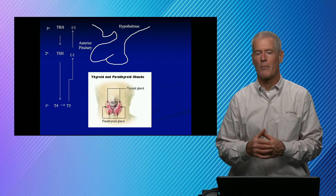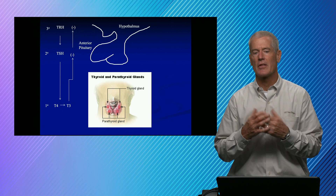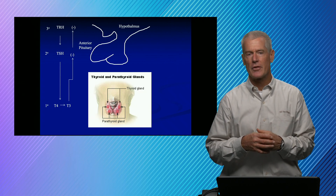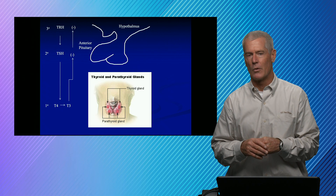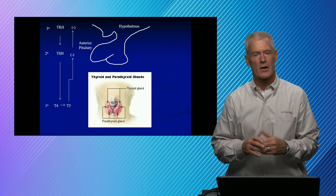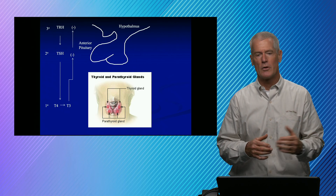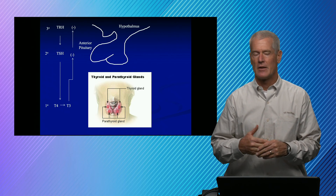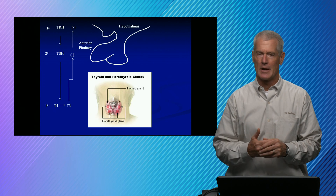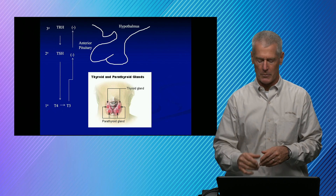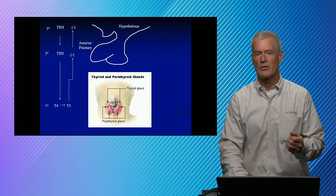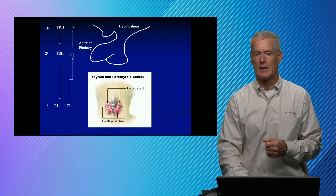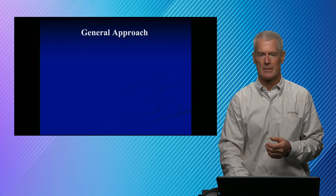We talk about primary disorders, and that's at the thyroid gland — most thyroid disease is of primary origin. There can also be pituitary problems at the TSH level, and hypothalamic problems as well. We do have a stimulation test that helps us figure out primary from secondary.